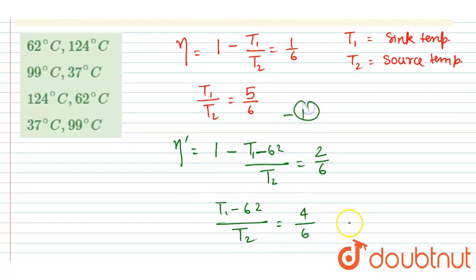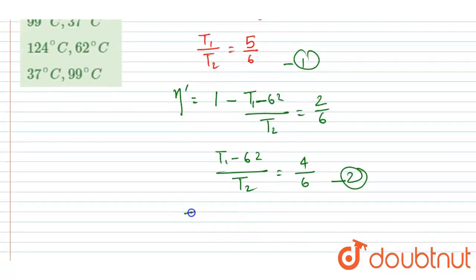So this is equation 1 and this is equation 2. If you divide the two expressions, you will get T₁ by this.